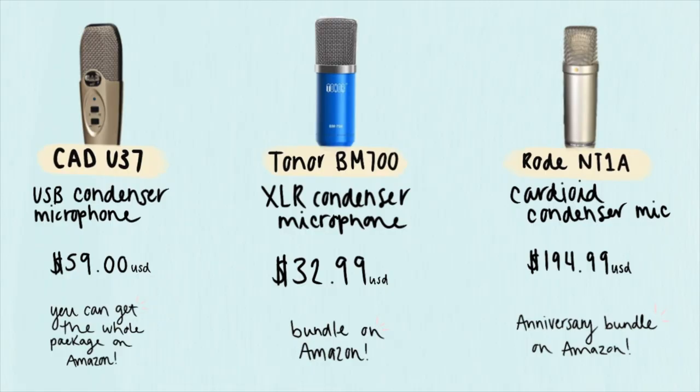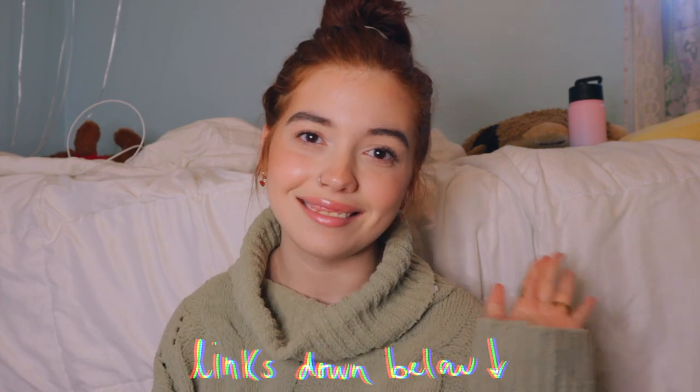Equipment I use: for guitar I own a Taylor 324 CE. For piano I was using a Yamaha keyboard for the longest time, but now I have the Williams Allegro 88 weighted key digital piano. For microphone I use the Rode NT1A — I think it's around $200, a really great price point. I also use the Tonar BM70 which is about $70, also a really great mic. You can also get USB condenser mics on Amazon — I used a $15 USB mic for some songs.